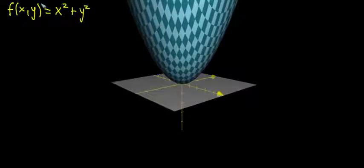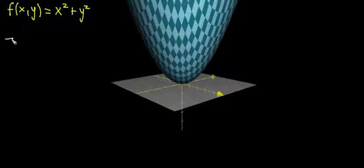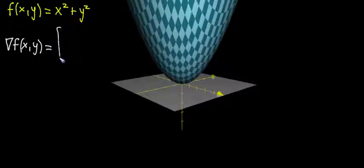And I defined in the last video the gradient to be a certain operator. An operator just means you take in a function and you output another function, and we use this upside down triangle. So it gives you another function that's also of x and y, but this time it has a vector valued output. And the two components of its output are the partial derivatives: partial of f with respect to x, and the partial of f with respect to y.